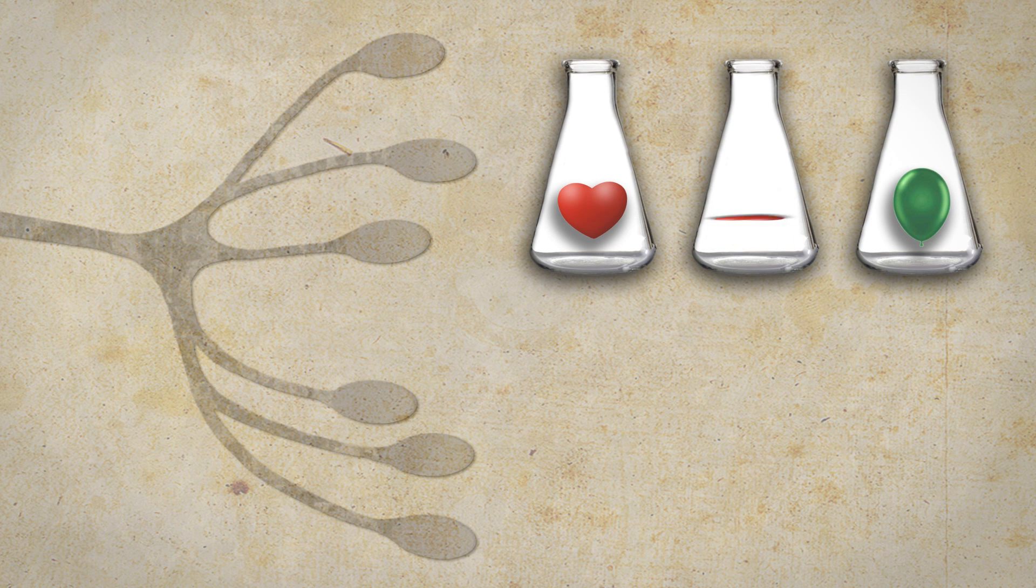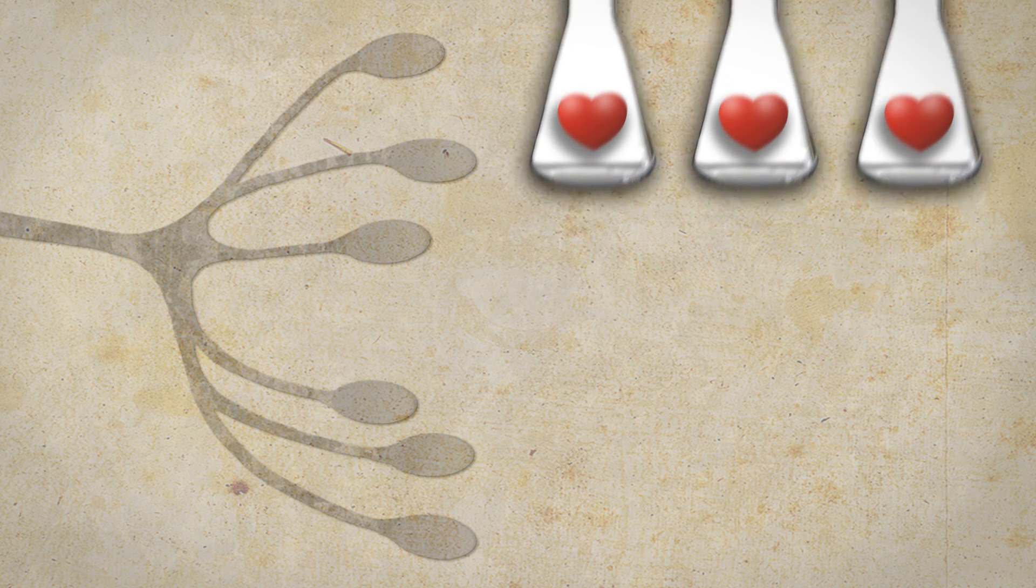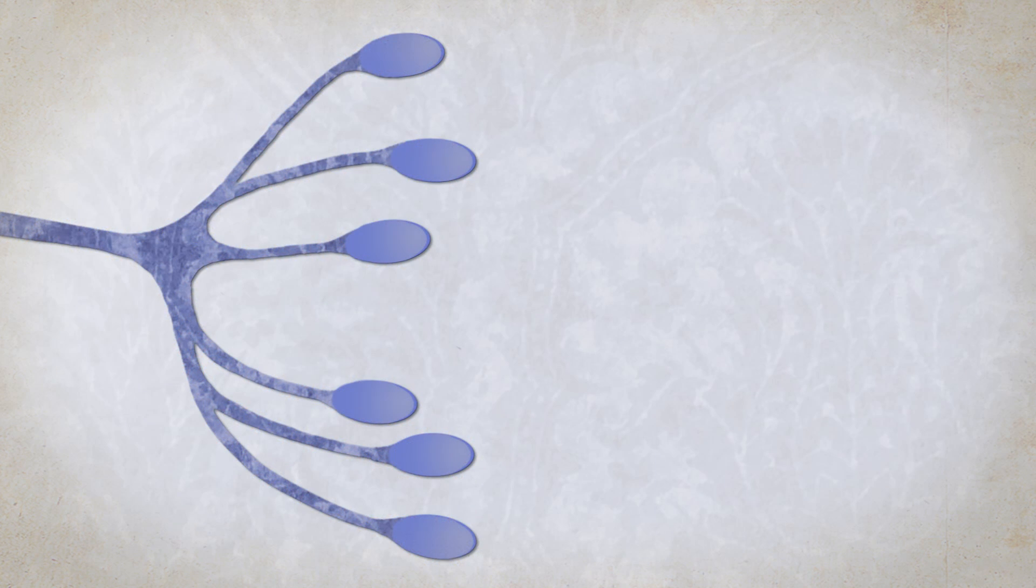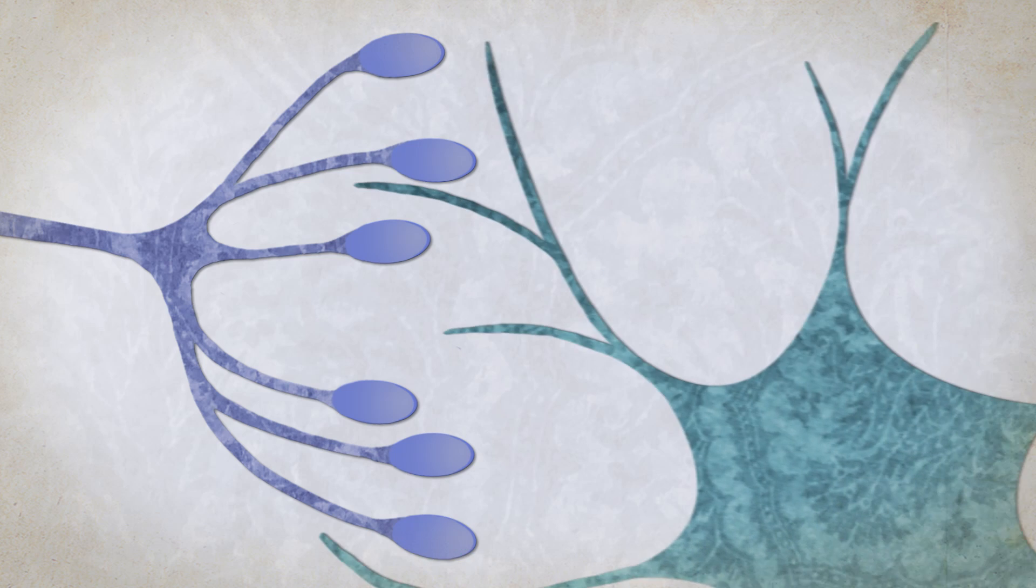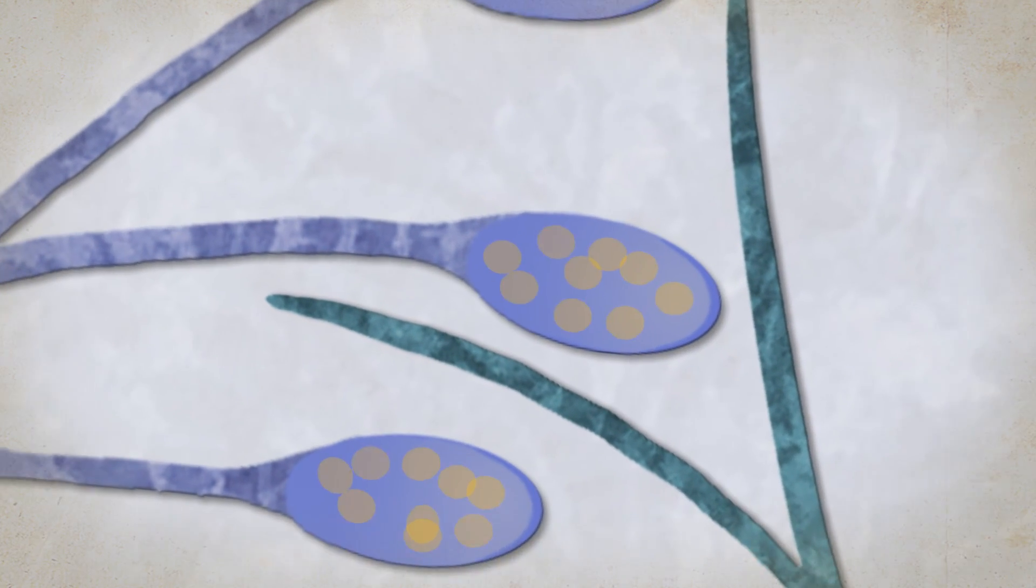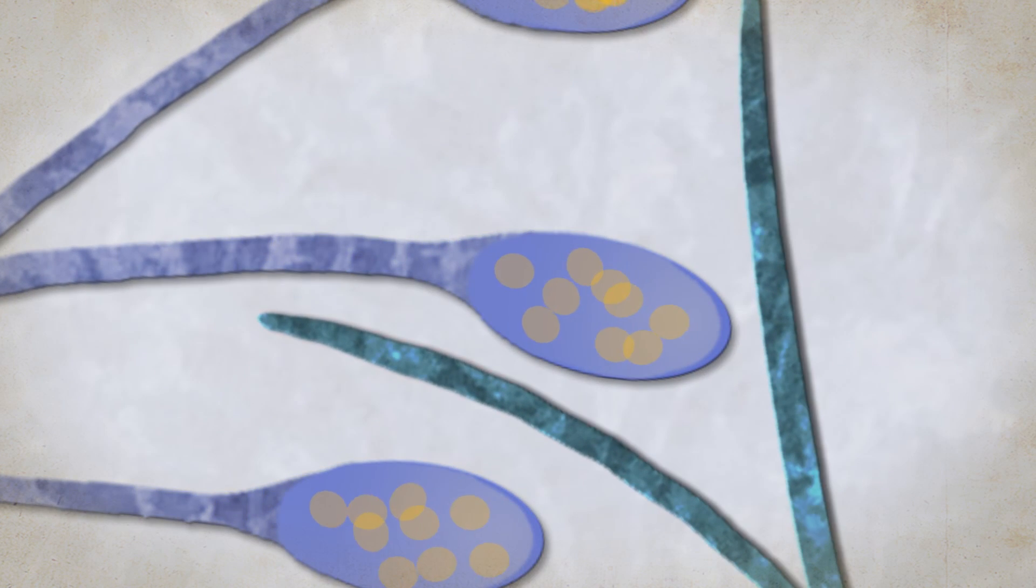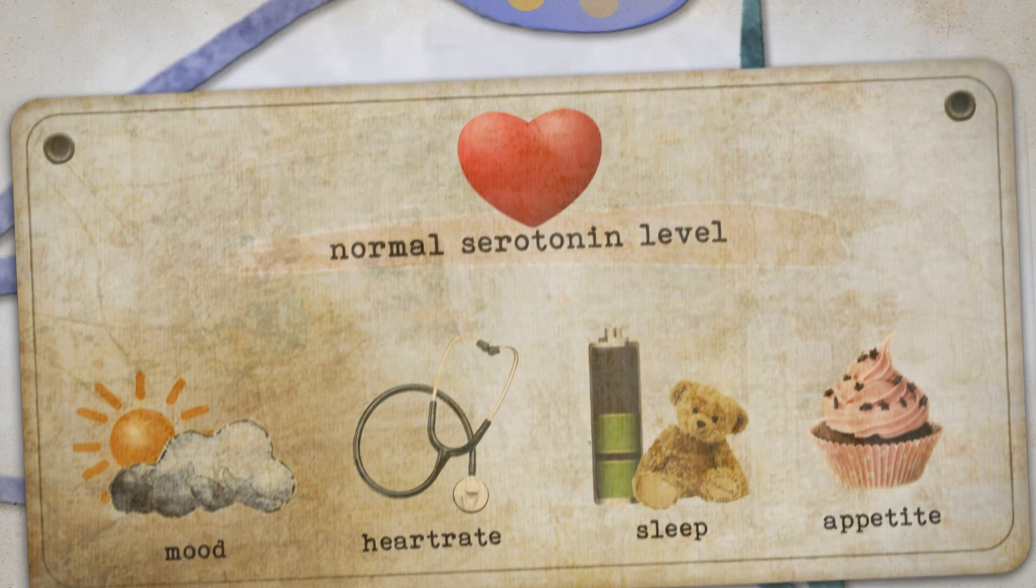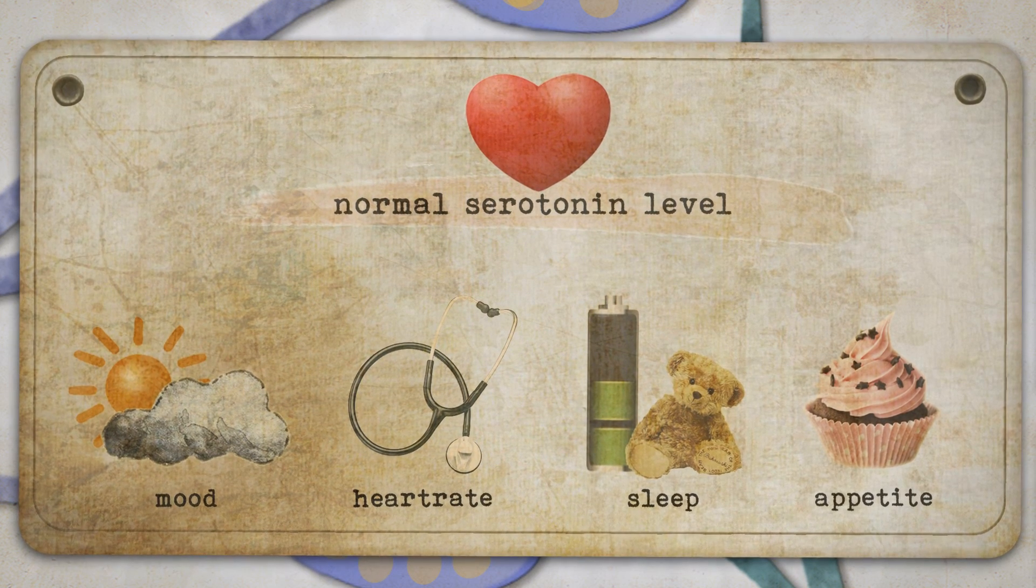Some cells contain just one type of neurotransmitter. Serotonin cells only produce and release serotonin. Serotonin cells release their serotonin into the synapse. This is the gap between their axon terminals and the dendrites of another cell. Serotonin is involved with the regulation of your mood, heart rate, sleep, and appetite.